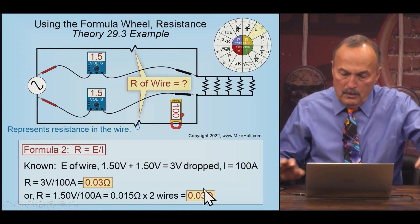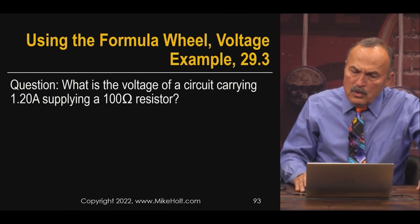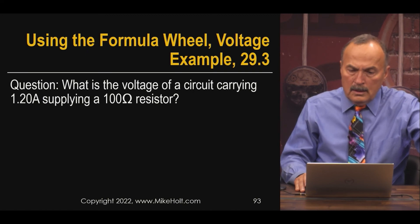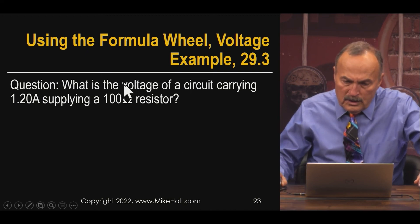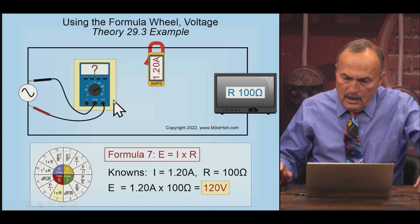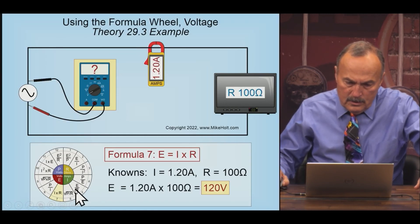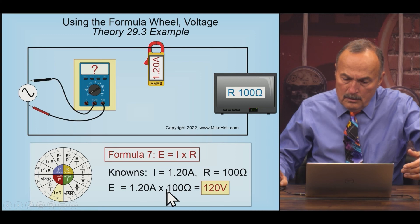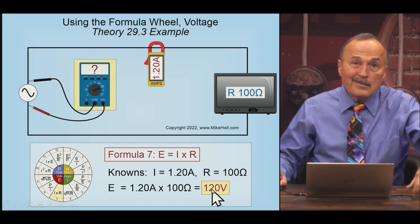What's the voltage of a circuit carrying 1.2 amps supplying 100 ohms? I'm looking for the voltage, E. I have I and R given. So E is equal to I times R. 1.2 amps times 100 ohms equals 120 volts. I won't say it's boring, but it's boring, right?